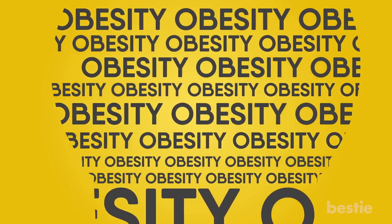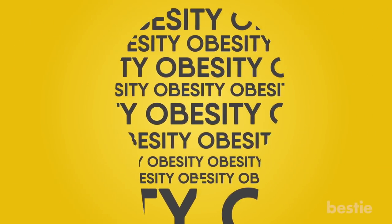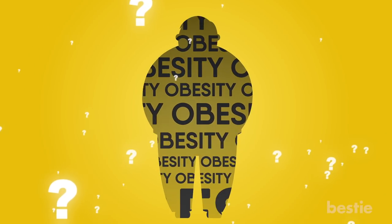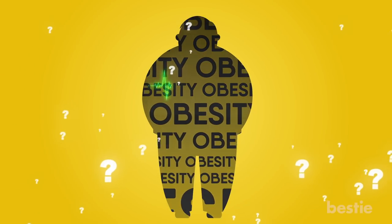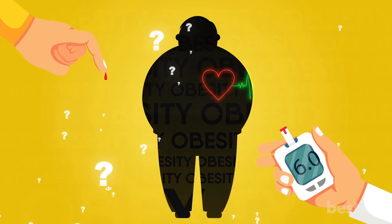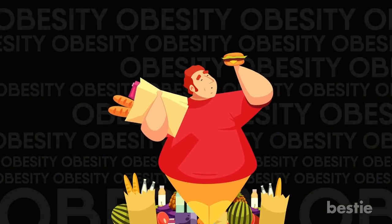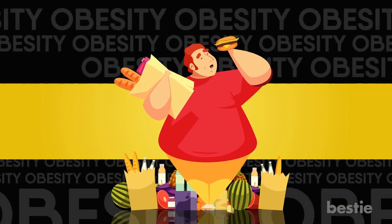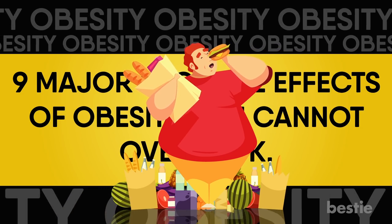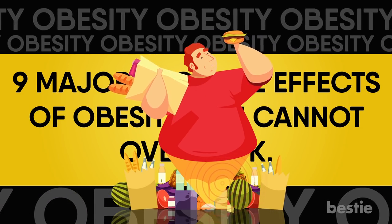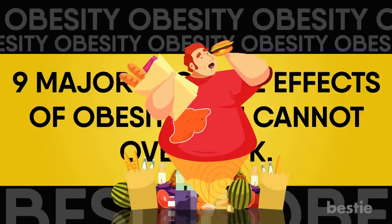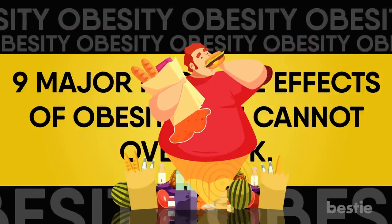Hey there, viewers! We all know obesity isn't good for us, but can you pinpoint exactly how it affects your health? The most common known effects of obesity are increased risk of diabetes and heart disease. What about the ones we don't know fully about? In today's video, we will be discussing the 9 major negative effects of obesity you can't overlook. Are your joint pains a direct result? What about your liver issues and difficulty breathing? We will be discussing all that and more!